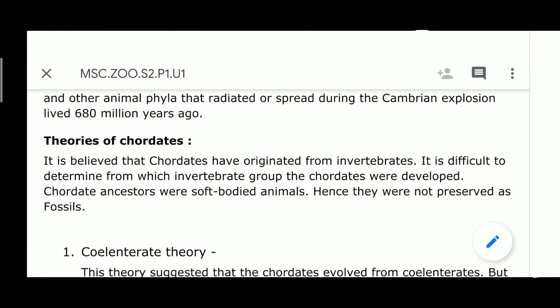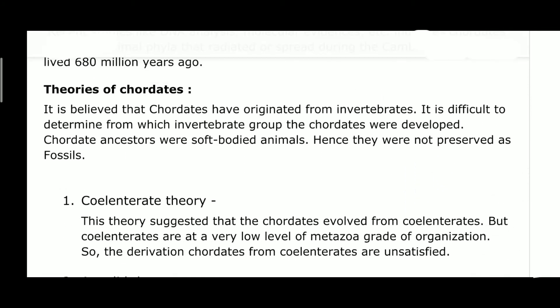Coming to the theories of chordates — many scientists proposed many theories in their own scenarios, but all theories state that chordates are originated from invertebrates. However, it is difficult to determine from which invertebrate group the chordates were developed, because the chordate ancestors were very soft-bodied animals and are not preserved as fossils, since they lacked hard calcium structures like bones.